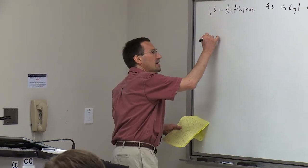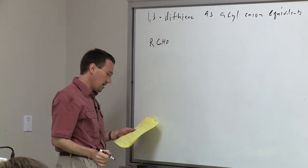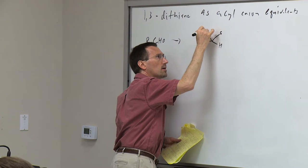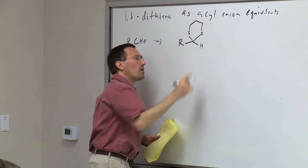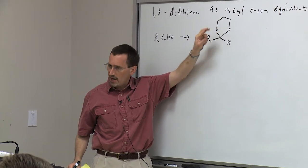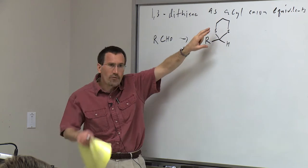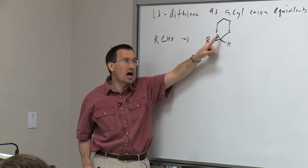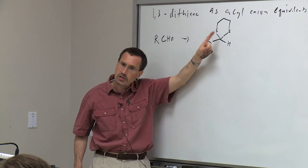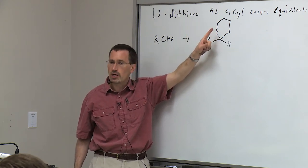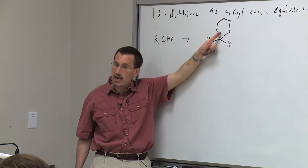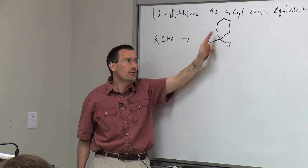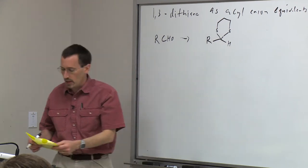The basic idea: you have an aldehyde, you go ahead and convert it to the 1,3-dithiane—the dithioacetal. You've seen acetals before; sulfur is right below oxygen in the periodic table. If you take a diol and react it with an aldehyde under dehydrating conditions, you generate an acetal. Similarly, if you take a compound with two thiol groups and react it with an aldehyde under dehydrating conditions, you generate the dithiane.